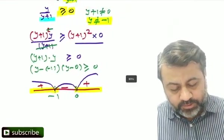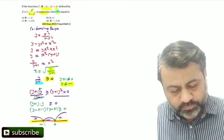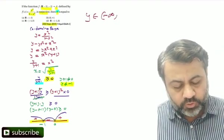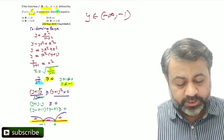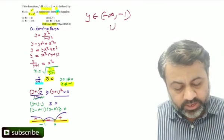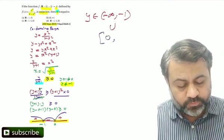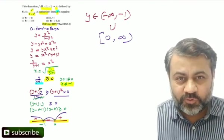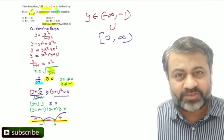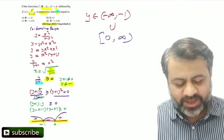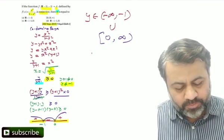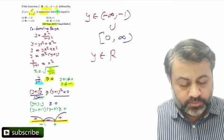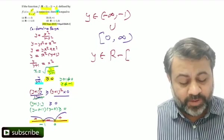So if I just put it down, what we get here is value of y can be minus infinity to minus 1 not included, so round bracket, union, understand box bracket because 0 is included, 0 to infinity. But if you observe, this does not match with any of my option. So what to do? Rewrite in a way so that it matches with one of the options. Now there is a catch. So what I do here is I say therefore y belongs to entire real line.